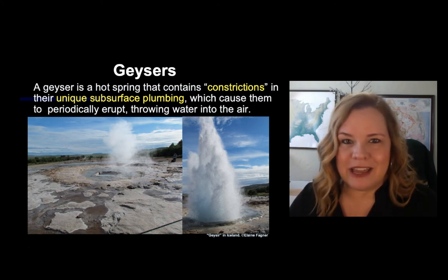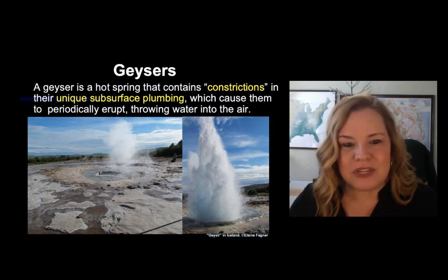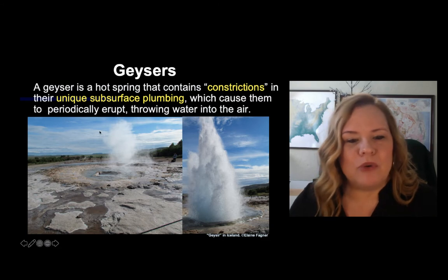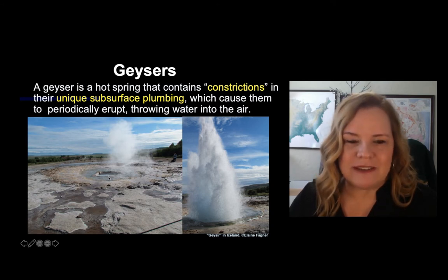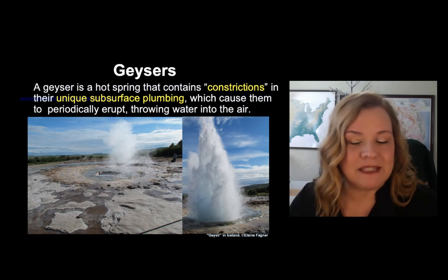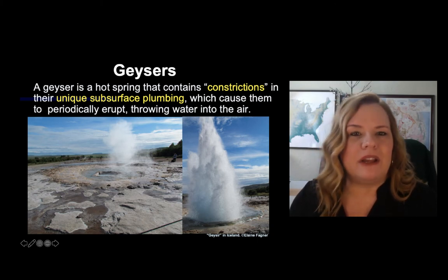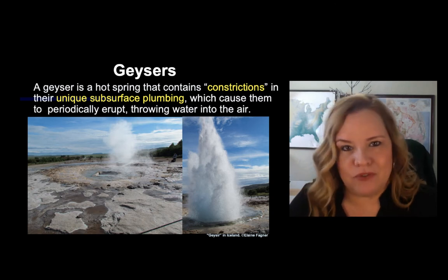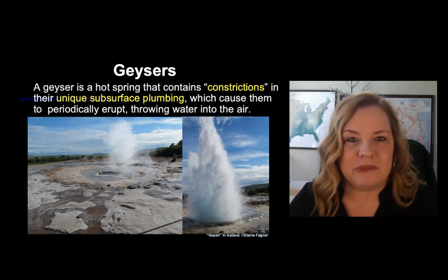This is actually a pool-type fountain geyser because you don't see any kind of cone structure. This is what Geysir looks like before it erupts. When you get that eruption, you can see how it's throwing water into the air — that is one way a geyser differs from a hot spring, because we don't see those types of eruptions in a hot spring.